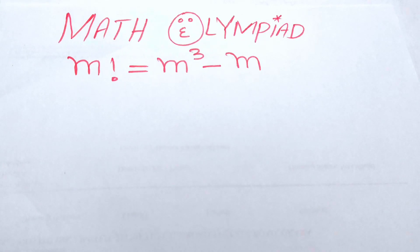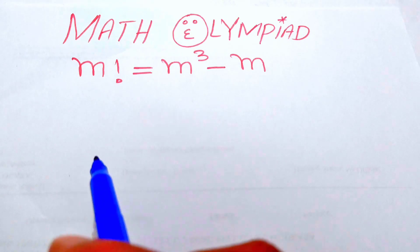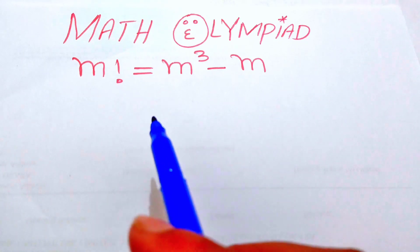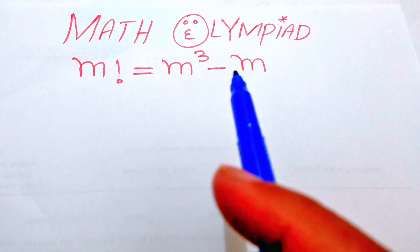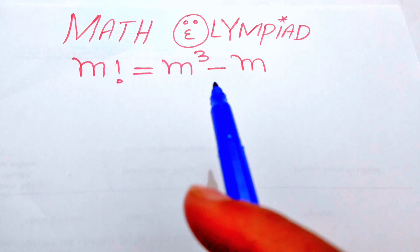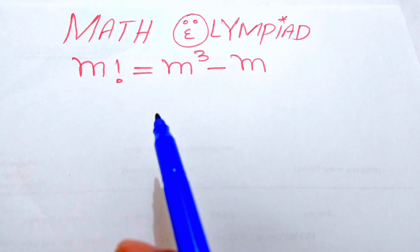Hello everyone, welcome. We will solve this math olympiad algebra problem. Here we have m factorial equals m cubed minus m, and we solve this problem for the values of m.